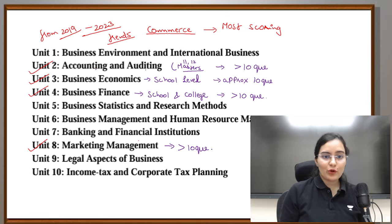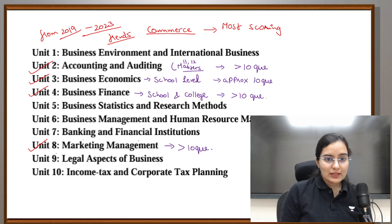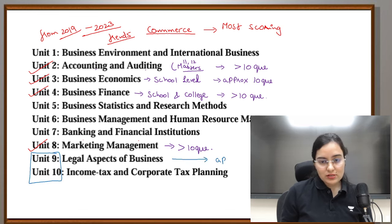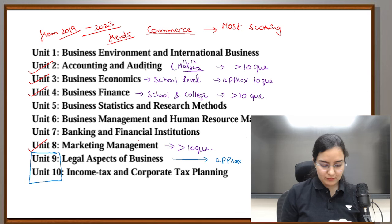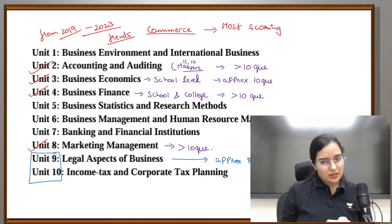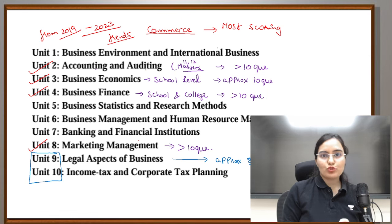Business finance gives more than 10 questions, again more than 10 questions. Marketing management also has more than 10 questions. For the remaining units, legal aspect and income tax have approximately 10 questions on average — about 8 to 9 questions as the average. That is why I have marked units 2, 3, 4, and 5 as the most scoring ones. Legal aspect of business may be new for many learners. Income tax has an average of 9 to 10 questions.